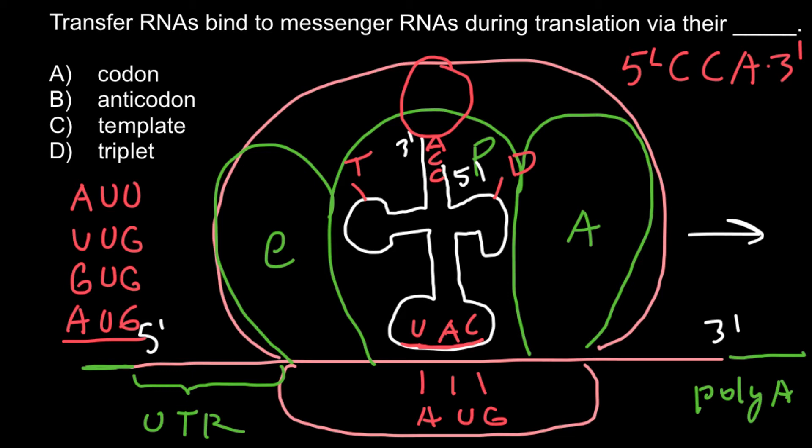So mitochondria has its own genetic makeup. One more time: trinucleotide sequence that we can find on the messenger RNA we call codon, and trinucleotide sequence that we can find on the tRNA we call anticodon. As you see, this is answer B. What are the rest of the answers? Answer A, codon, is something we can find on the messenger RNA. Template would be the DNA strand that is used to build the complementary strand of messenger RNA. And triplet would be just another name for codon.